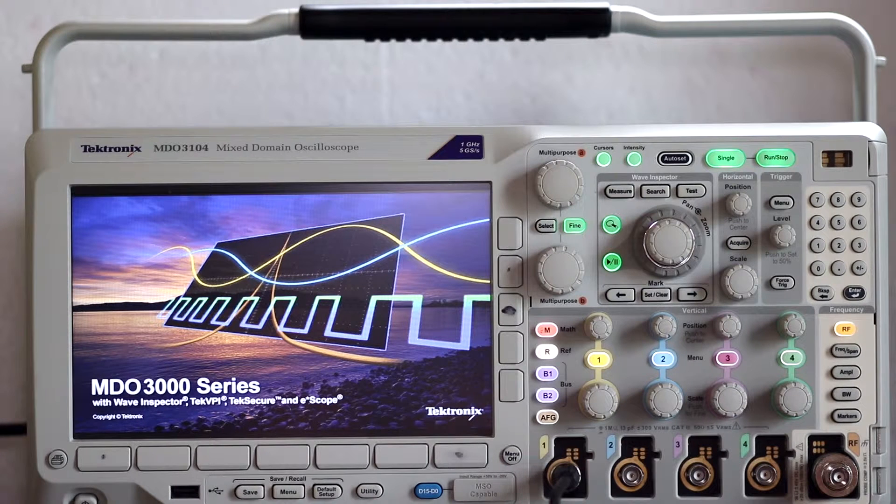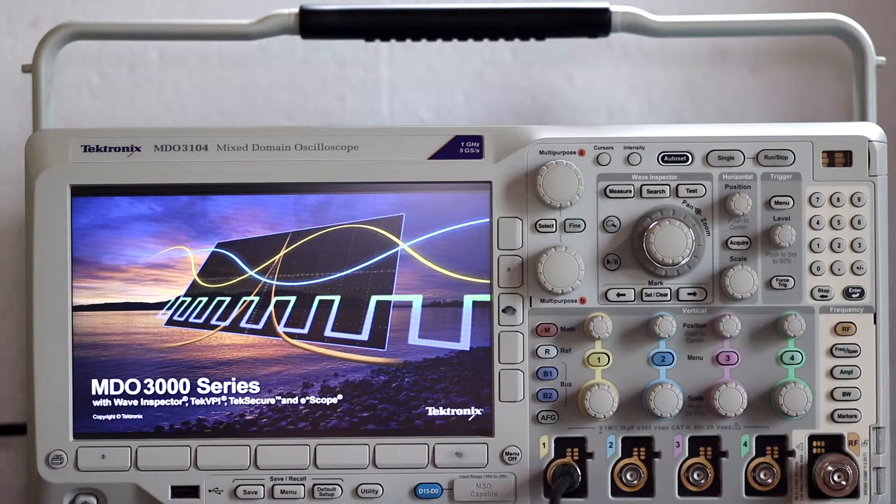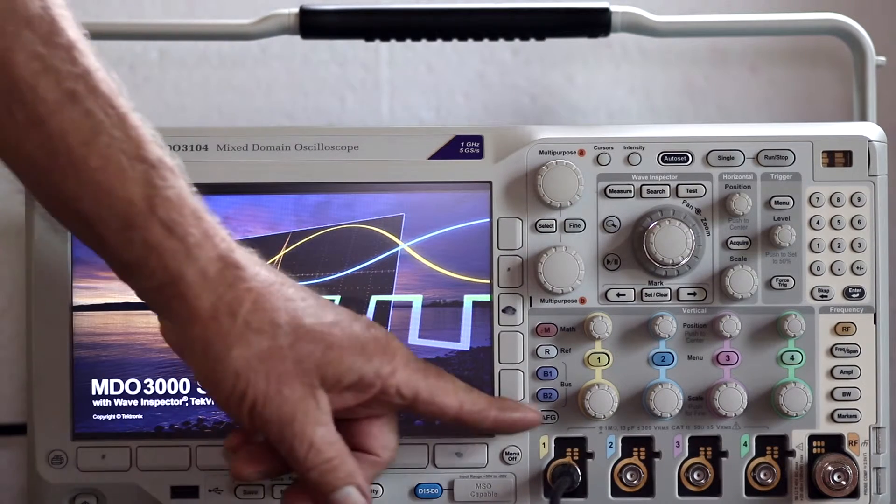To illustrate, we've connected the built-in arbitrary function generator to analog channel 1 using a BNC cable.